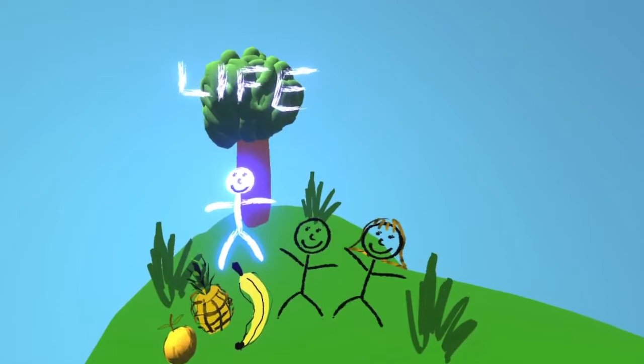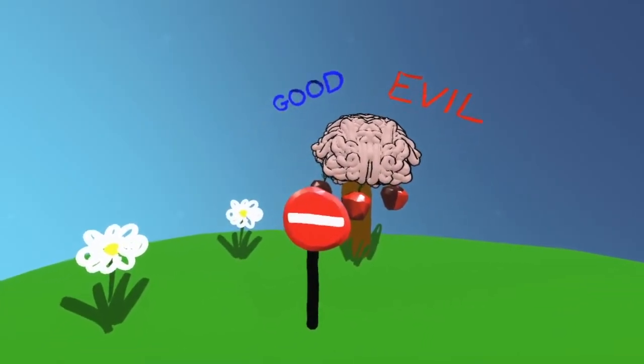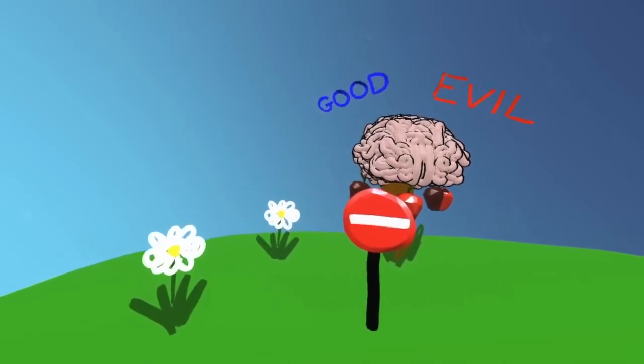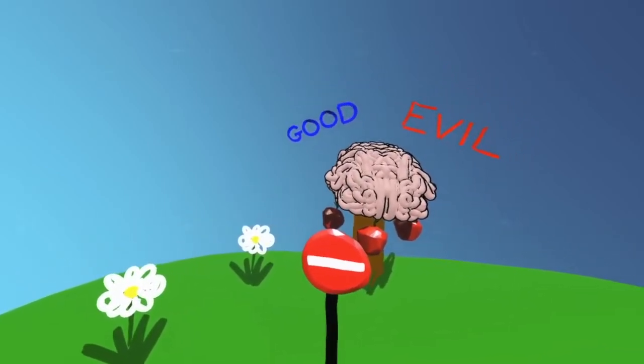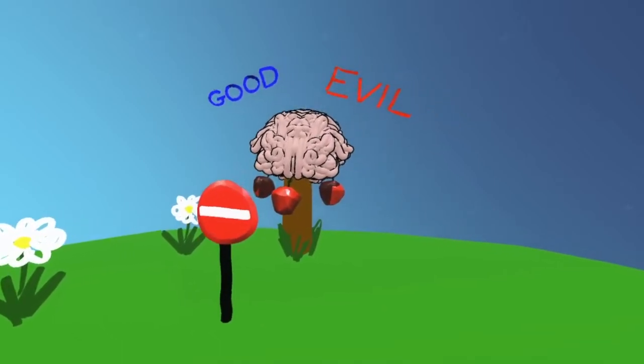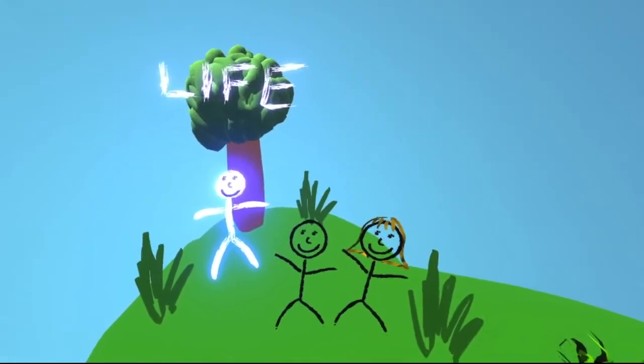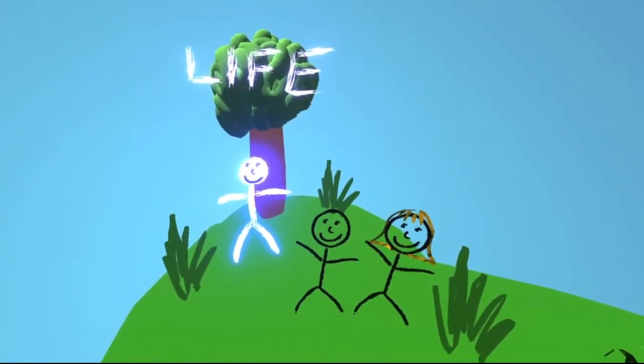pluck fruit from each branch except for the knowledge tree for that one will show you both evil and good and sadly you'll have to leave. So Adam and Eve stayed away from that tree and did all that God said they should. They walked and they talked with him every day and life was incredibly good.